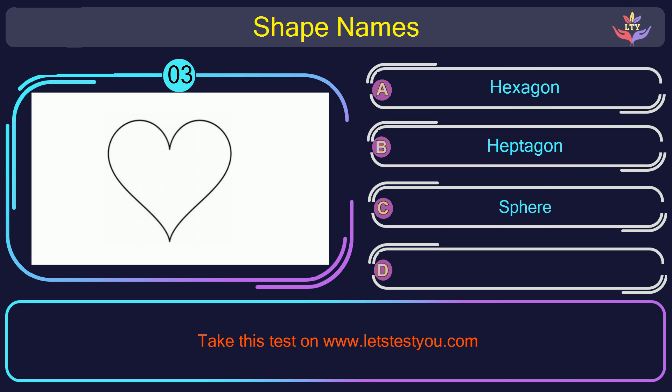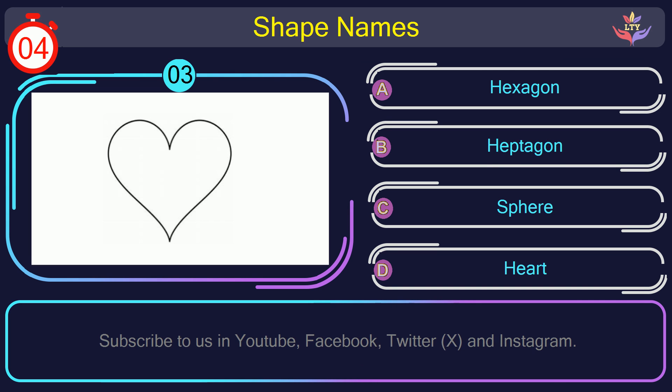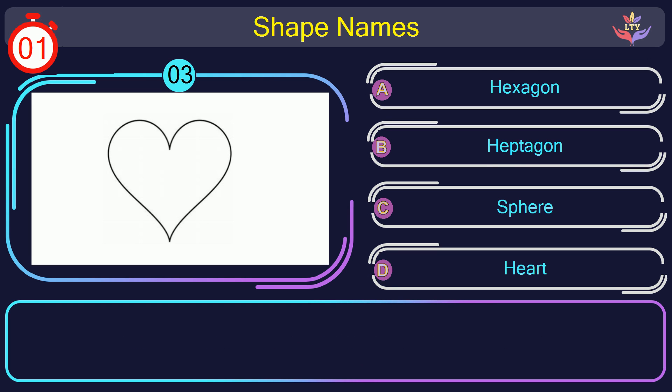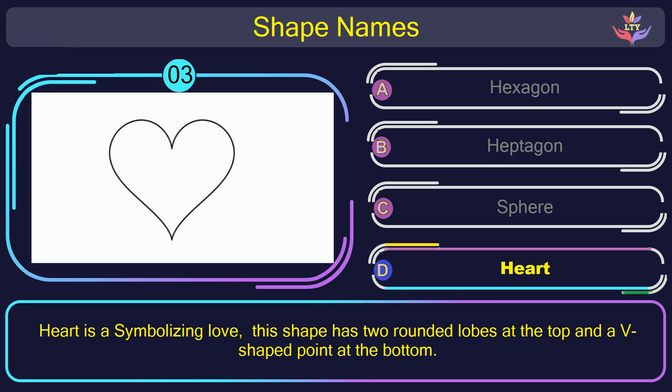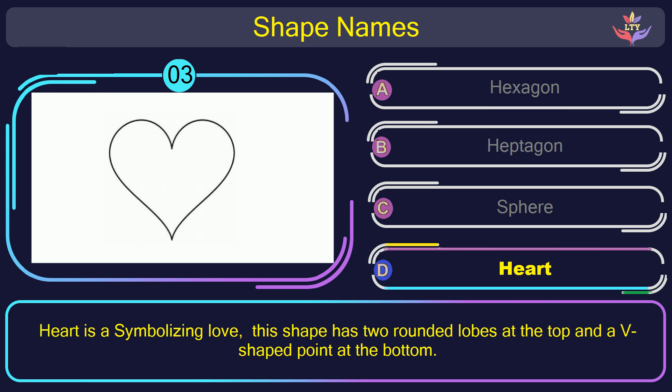Question number 3. What is the name of the shape in this picture? The correct answer is option D. Heart. Heart is a symbol of love. This shape has two rounded lobes at the top and a V-shaped point at the bottom.